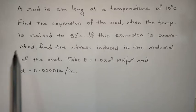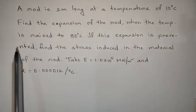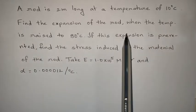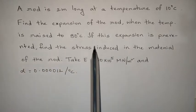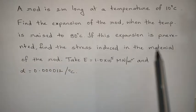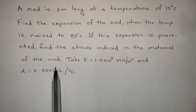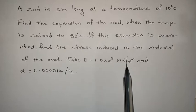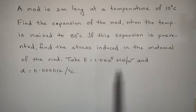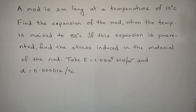A rod is 2 meters long at a temperature of 10 degrees centigrade. Find the expansion of the rod when the temperature rises to 80 degrees centigrade. If this expansion is prevented, find the stress induced in the material of the rod. Take E equals 1.0 into 10 power 5 mega Newton per meter square and alpha equals 0.0000012 per degree centigrade.